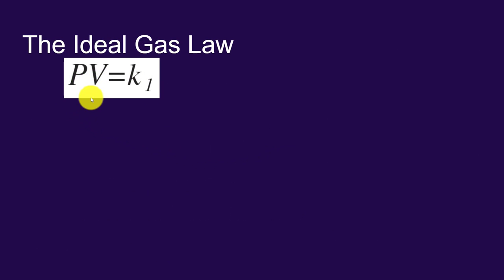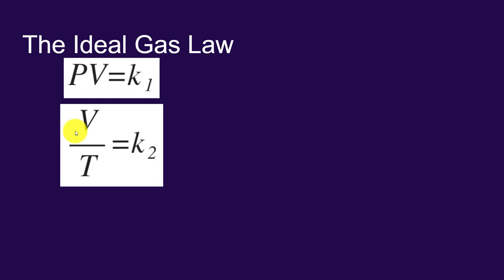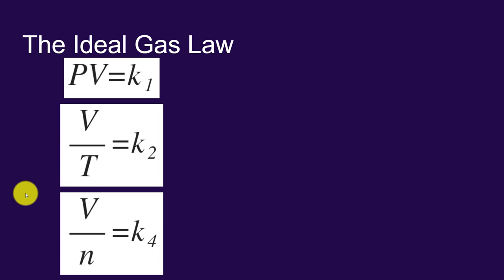We have these statements: Boyle's law, pressure and volume are inversely proportional. Charles' law, volume and temperature are directly proportional. And now Avogadro's law, volume and amount are directly proportional.